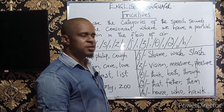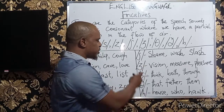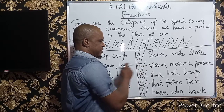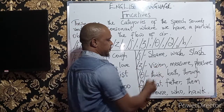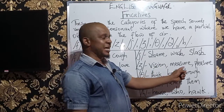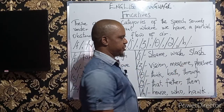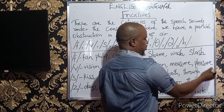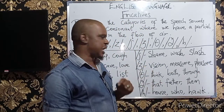The next sound is /ʒ/, which is the voiced counterpart — same pattern of articulation, but voiced. So we have words like 'vision,' 'measure,' and 'pleasure' — all containing the /ʒ/ sound.